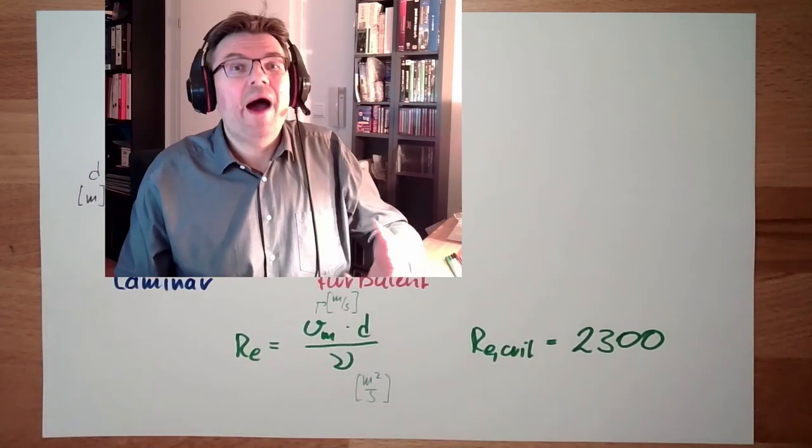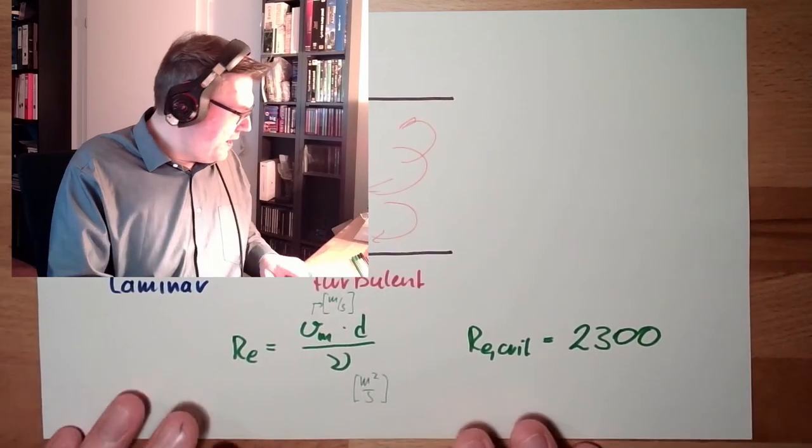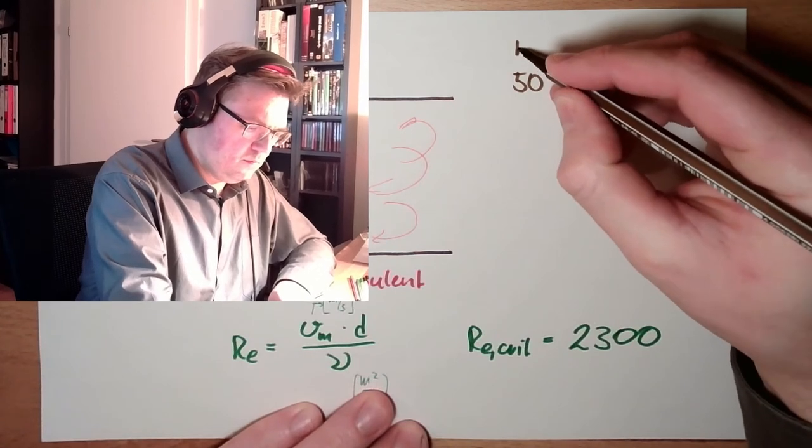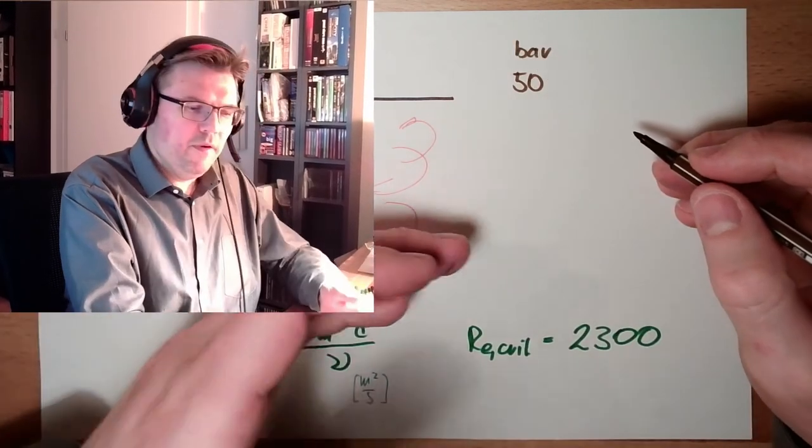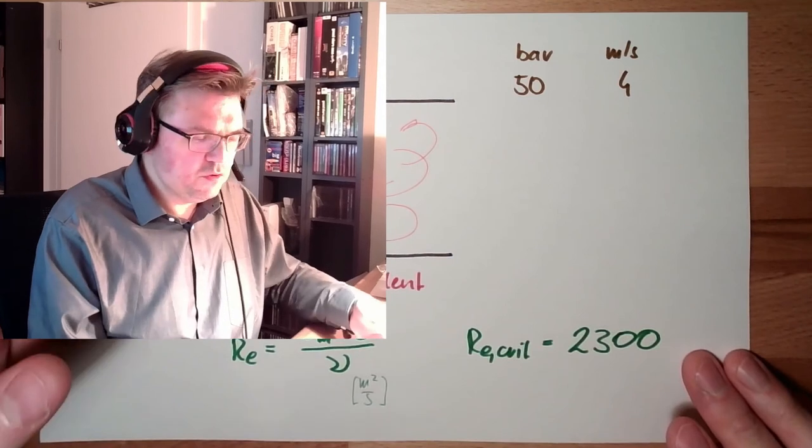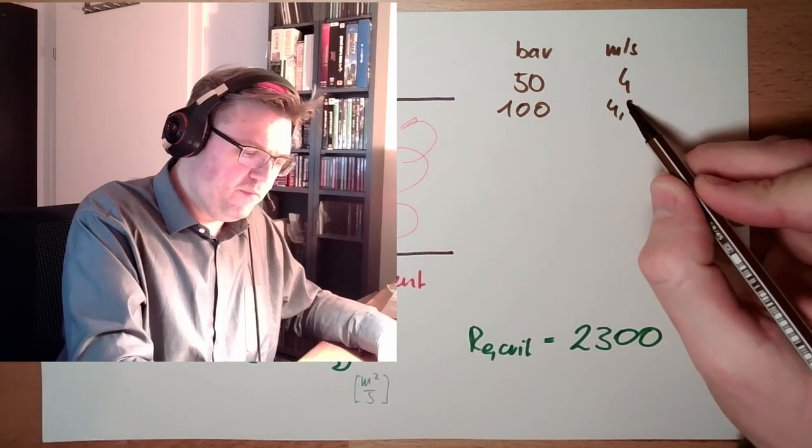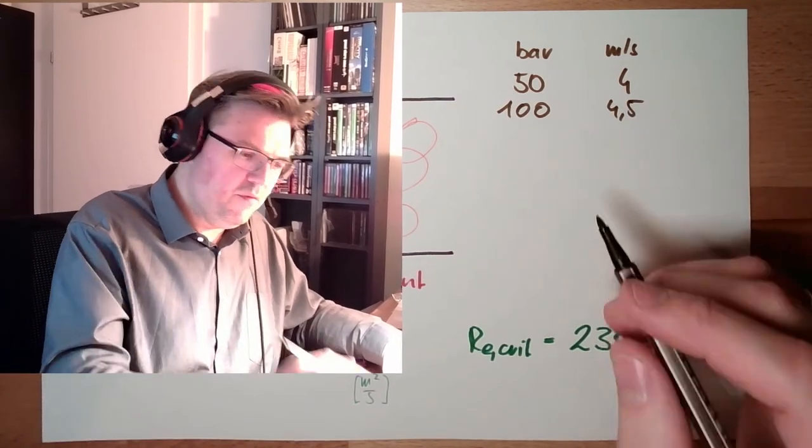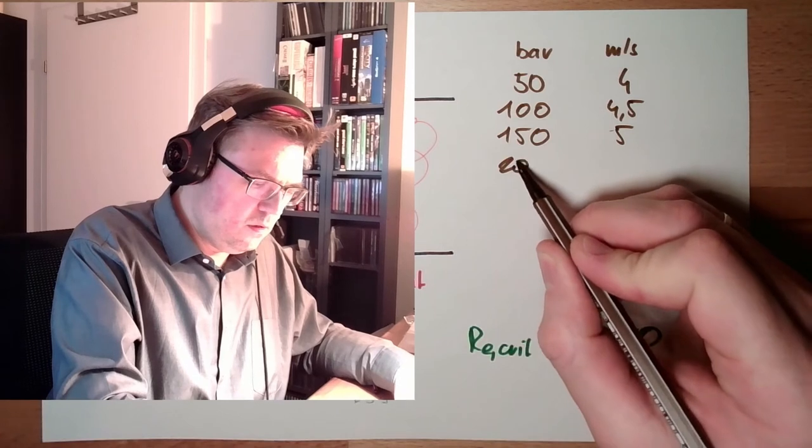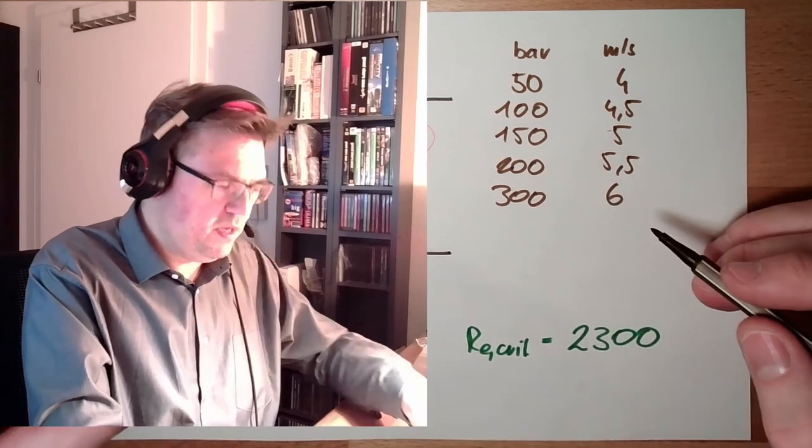With higher pressure, we can go at higher speeds. This means, if our pressure line here has around 50 bars, we can go with speeds around 4 meters per second. If the system has not only 50 bar, but 100, then we can speed up to 4.5 meters per second. If we have 150, we can have around 5 meters. If we have 200, we can have 5.5. If we have even 300, we can go up to 6 meters per second. Speed of the liquid.